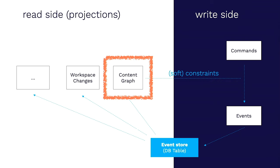The main model on the read side is the content graph — so when you interact with a node API you are almost completely interacting with the content graph API internally. There are also soft constraints for checking boundaries. This architecture has loads and loads of consequences.